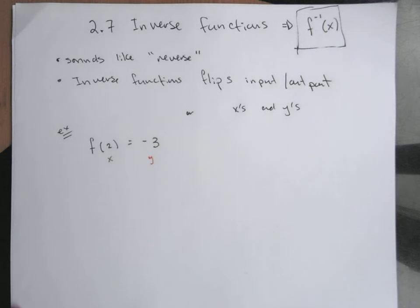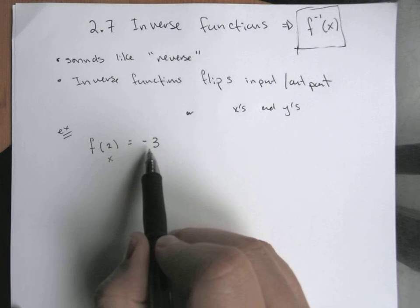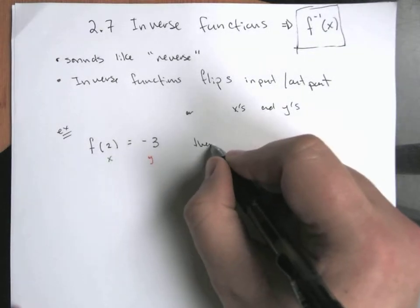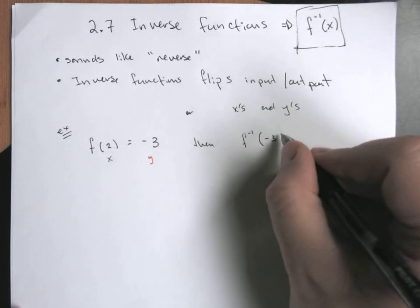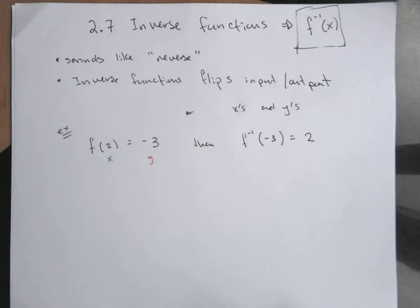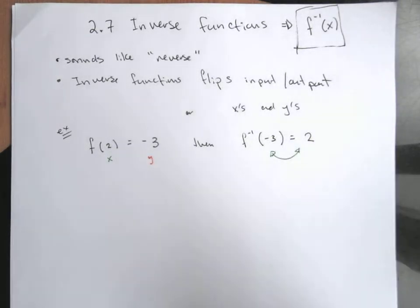We're changing the roles of the x's and the y's. So if f(2) takes me to minus 3, when the x is 2 I end up at negative 3, then f inverse of negative 3 is going to go backwards to 2.